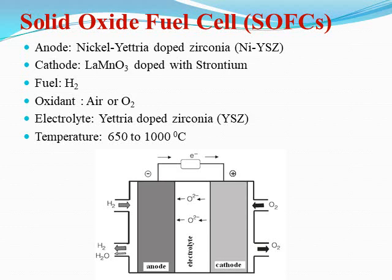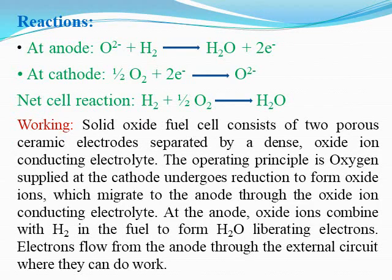During the combustion of hydrogen and formation of water, electrical energy is derived from the system. The nickel-doped YSZ anode and strontium-doped lanthanum manganite cathode are sandwiched together with YSZ as the electrolyte. Hydrogen is inserted from the anode inlet and oxygen from the cathode inlet.